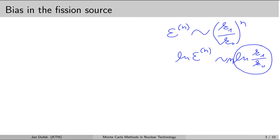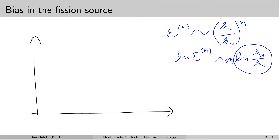Since k1/k0 is less than one, its logarithm is negative. If we plot the number of cycles on the horizontal axis and the logarithm of the error in the fission source on the vertical axis, the theoretical convergence appears as a straight line with a negative slope. However, this equation does not account for the random noise introduced at every cycle, so the actual Monte Carlo fission source convergence differs from this straight line.